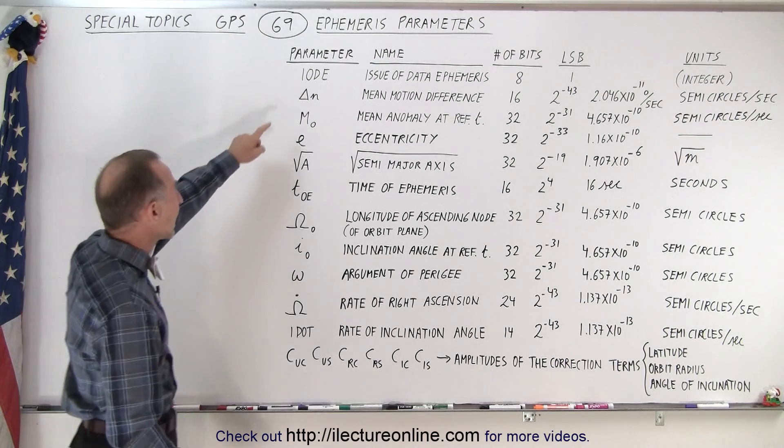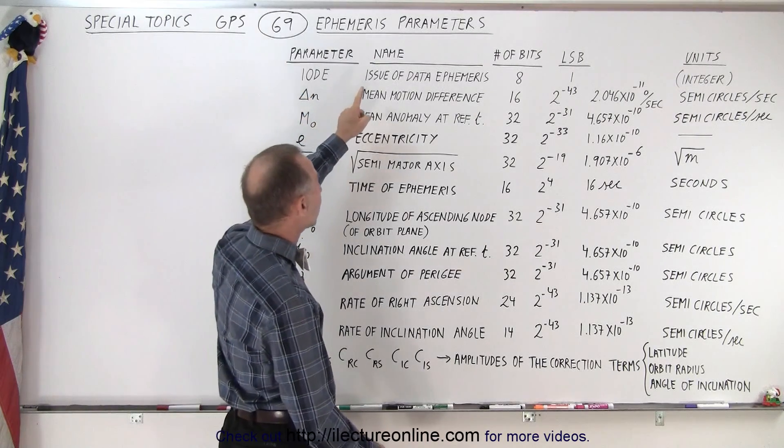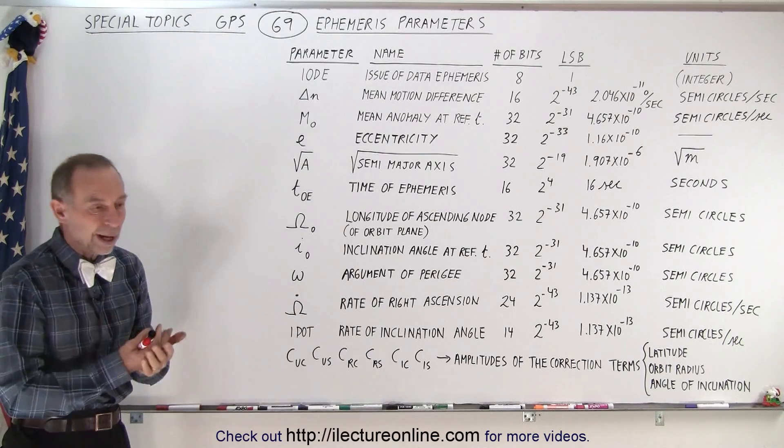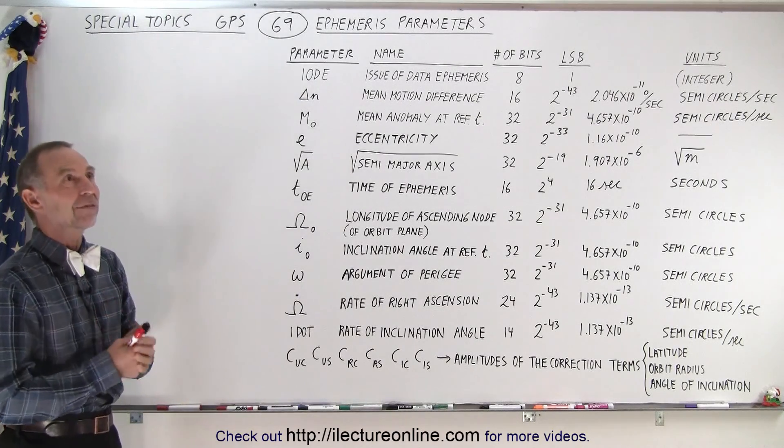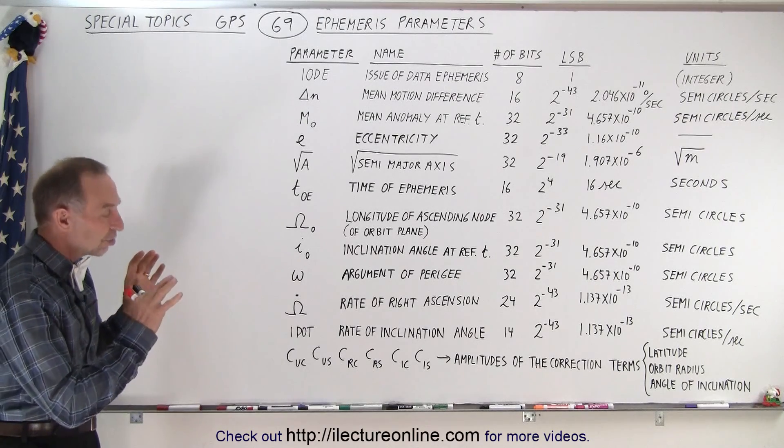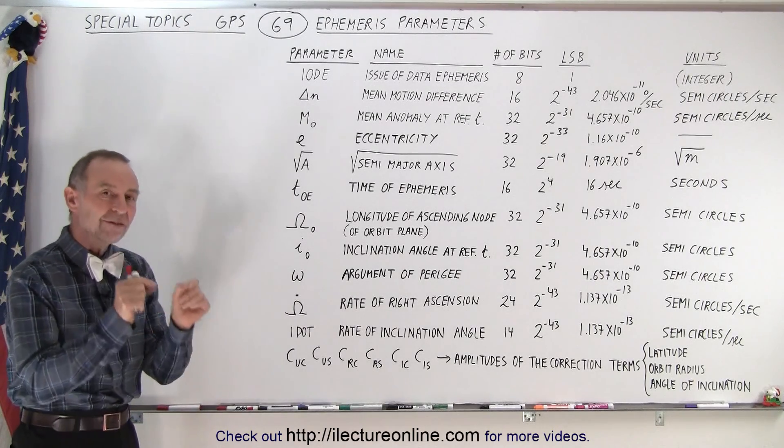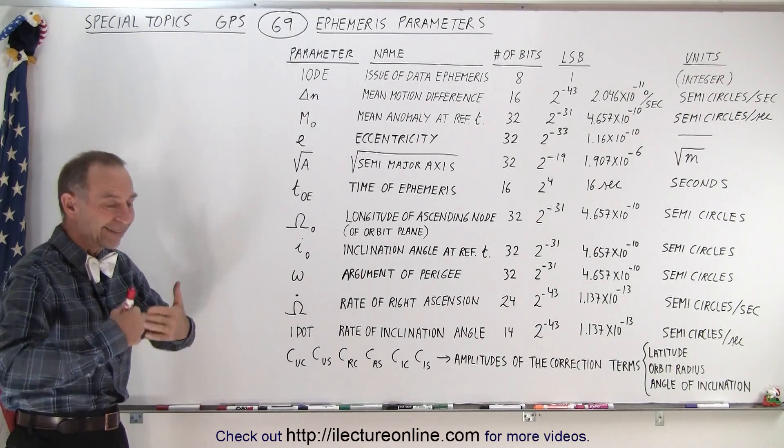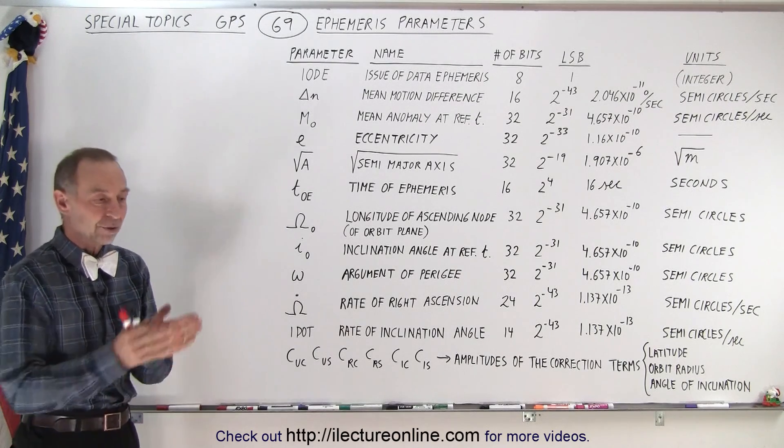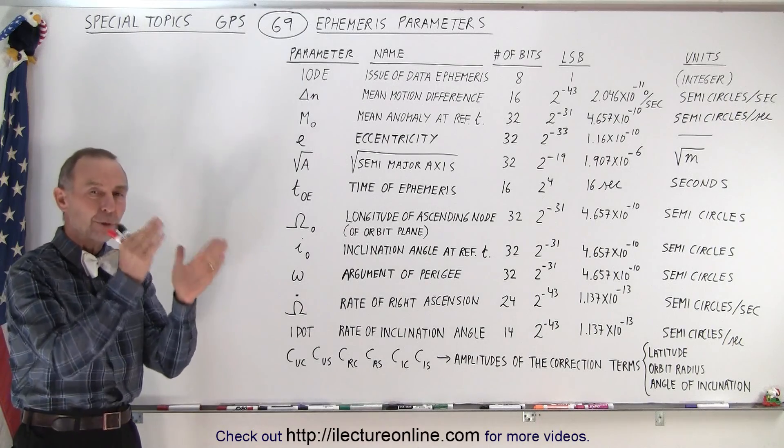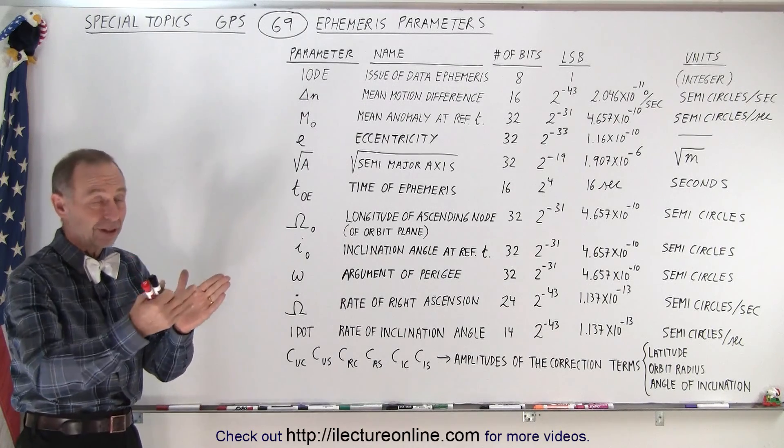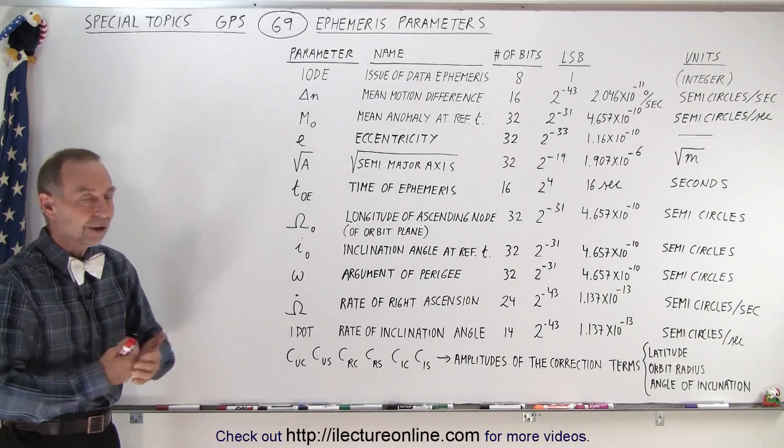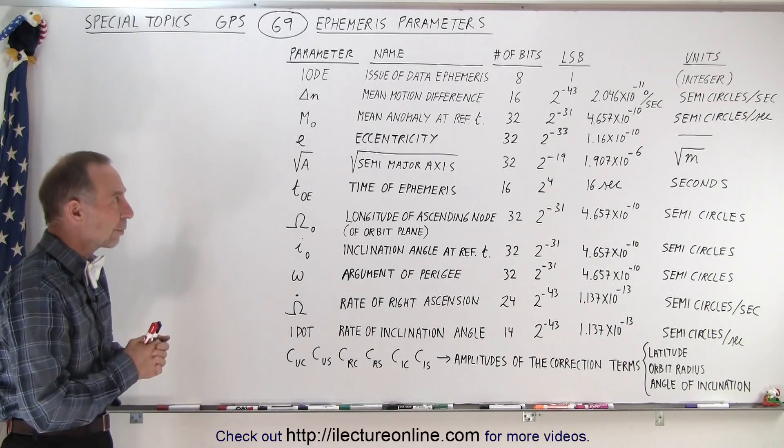First we take a look at the IODE which is the issue of data ephemeris. That is an integer number typically between 1 and 500 or something like that, which indicates which set of ephemeris data we're dealing with. In ideal conditions we'd get 6 new sets every 24 hours, each set covering a period of 4 hours during the day.